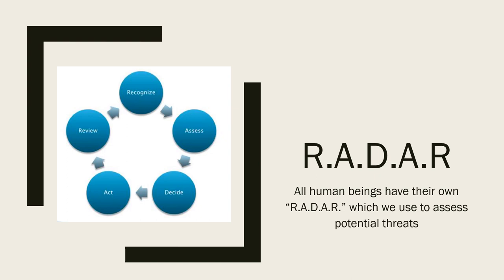RADAR — this isn't in your book, but I thought it was something kind of interesting that I found. All human beings have their own radar, which we use to assess potential threats. It's important to understand the process of performing a threat assessment so we can maintain our safety and the safety of others. By understanding and maintaining an awareness of the common ways in which we assess threats, then we can more easily manage our own behaviors to be perceived as being less threatening to others. When we think about RADAR, R is Recognize — observe what's going on, something has changed.